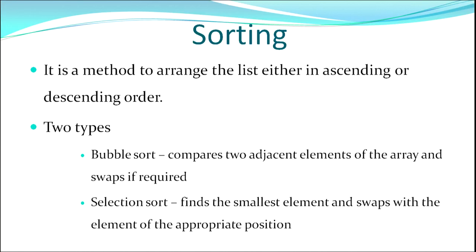Next we move on to sorting — arranging the list in ascending or descending order. Two types are covered: bubble sort, where two adjacent elements are compared and swapped if required, and selection sort, where the smallest or largest element is found and swapped into its correct position.